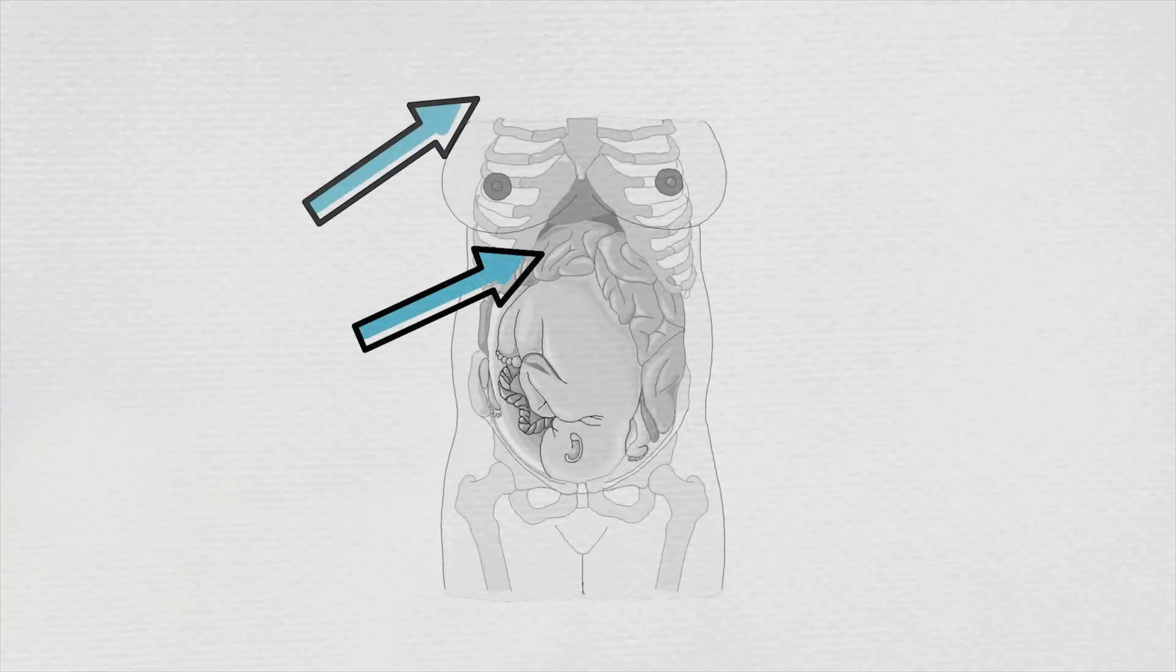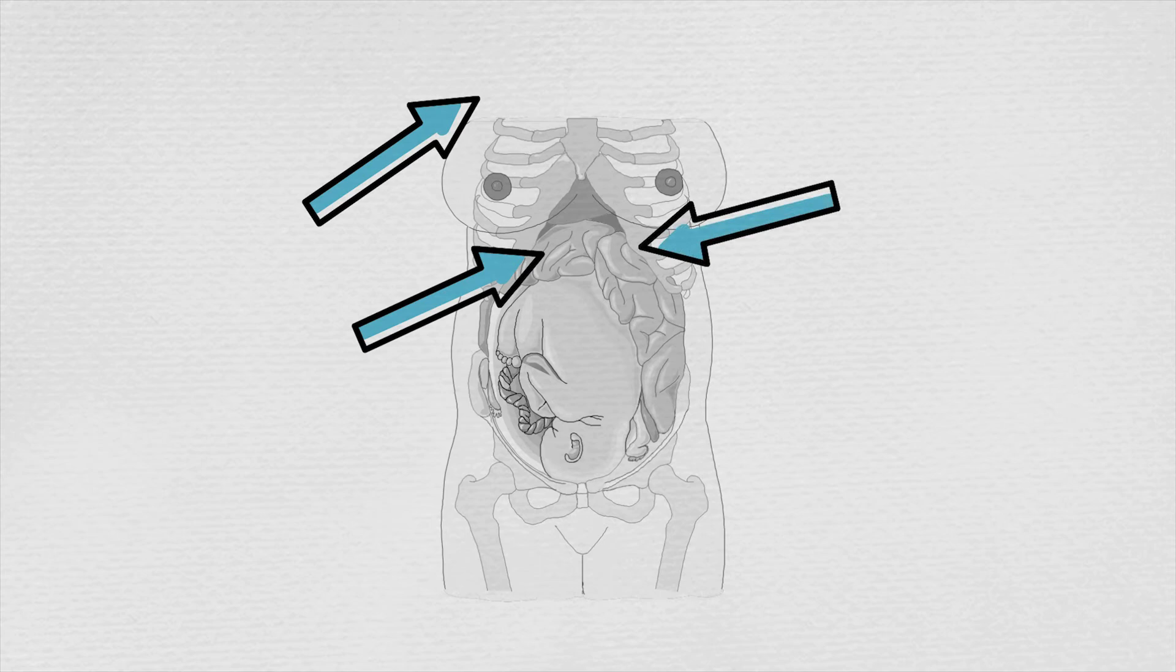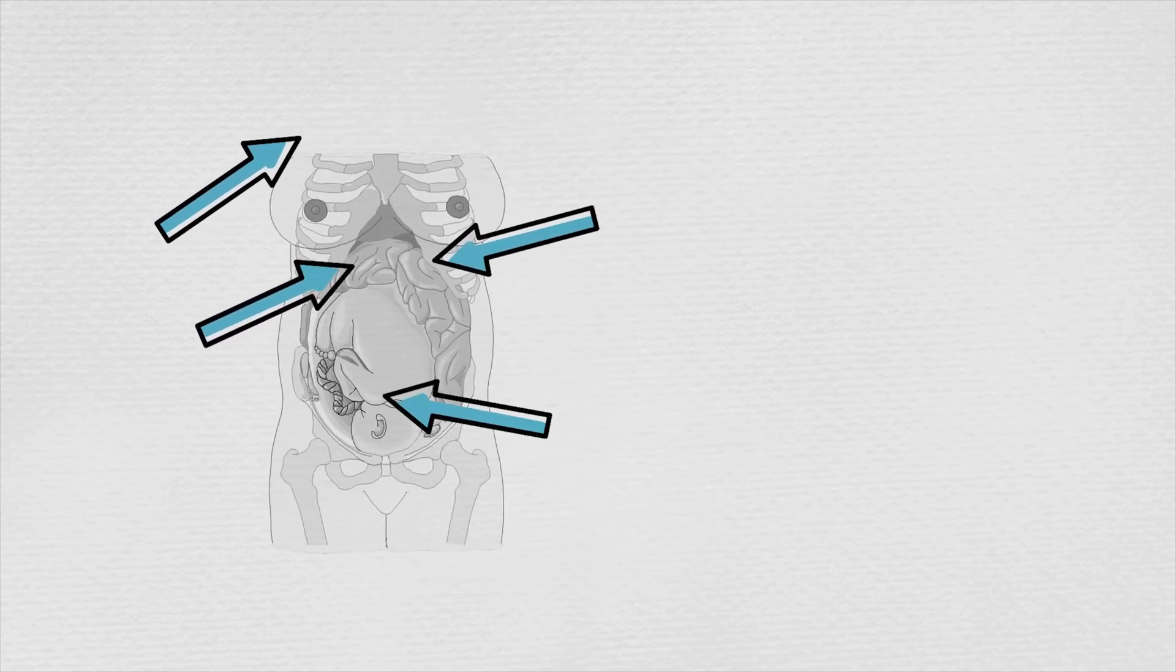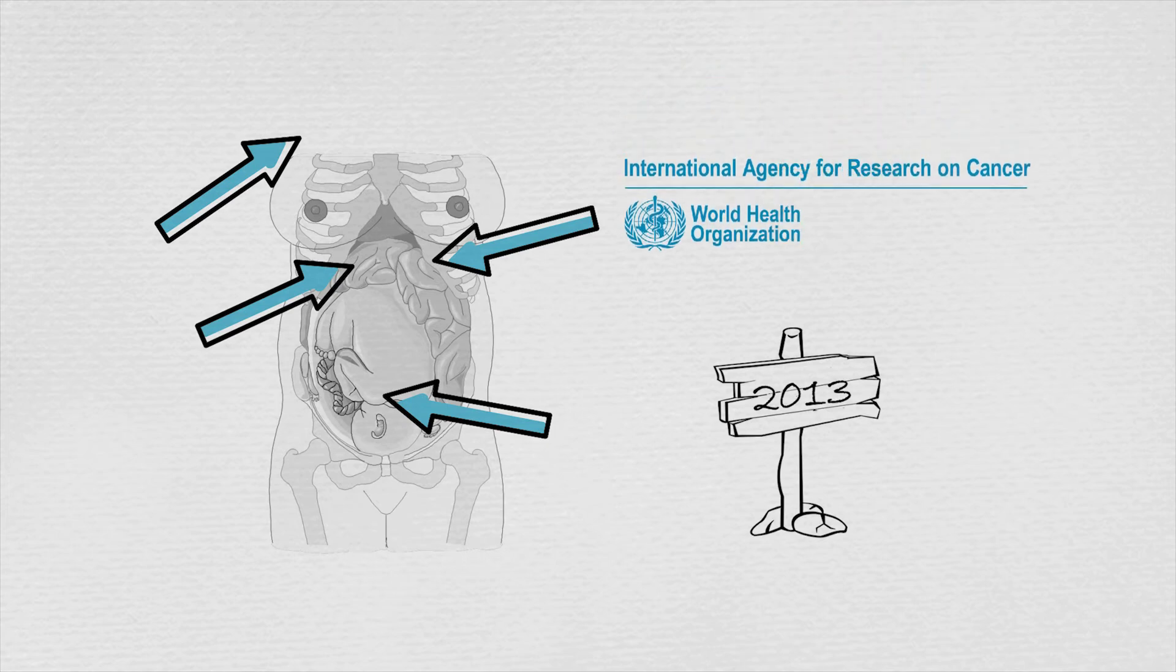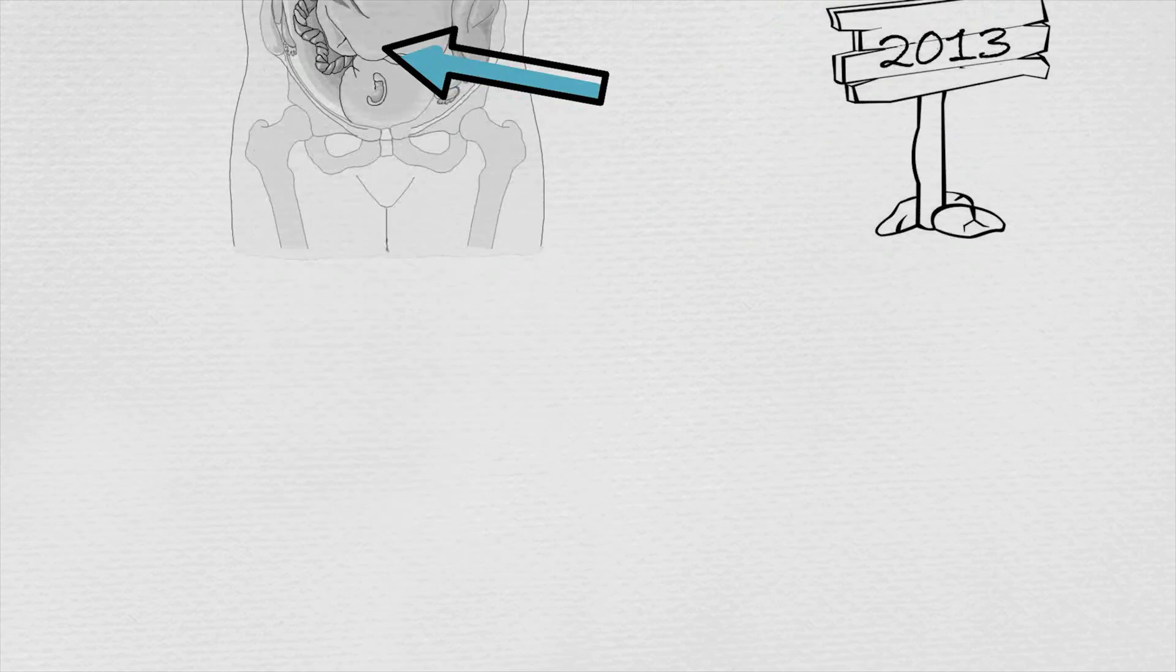PCBs can damage the liver, the brain and the kidneys. As PCBs are endocrine disruptors, there is an alarmingly high risk of PCBs in breast milk, which could harm the unborn child. In 2013, PCBs were classified as carcinogen to humans by the International Agency for Cancer Research.